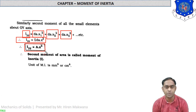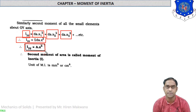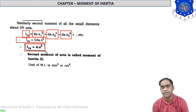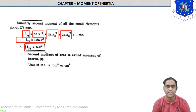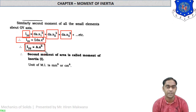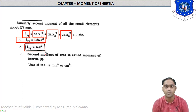Second moment of area is called moment of inertia. This is a very simple definition. If asked in the exam, you can write: second moment of area is called moment of inertia. The unit of MI is mm⁴, cm⁴, or m⁴. From now on, we are calling it MI, meaning moment of inertia.